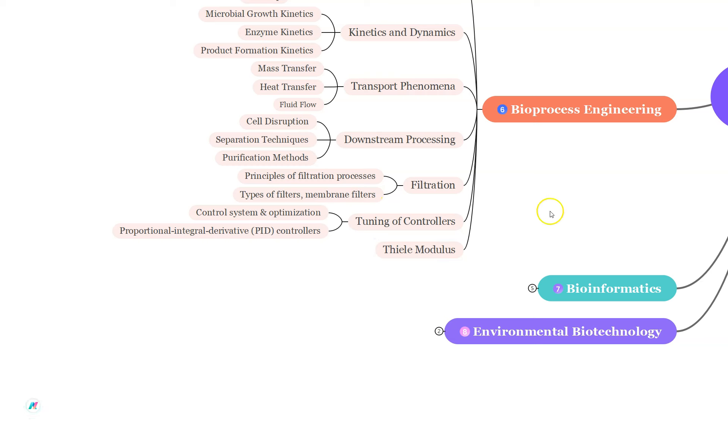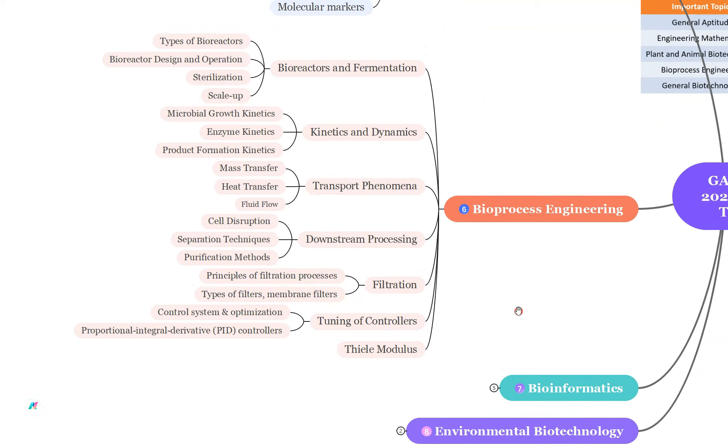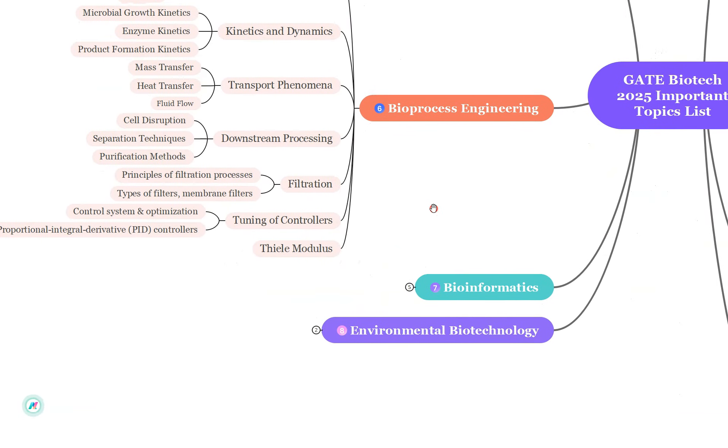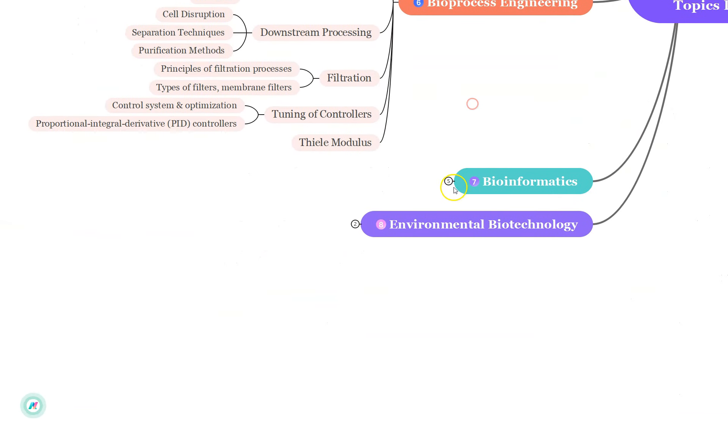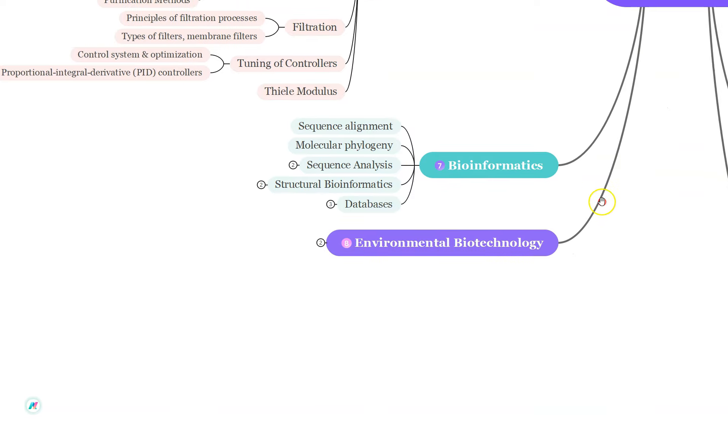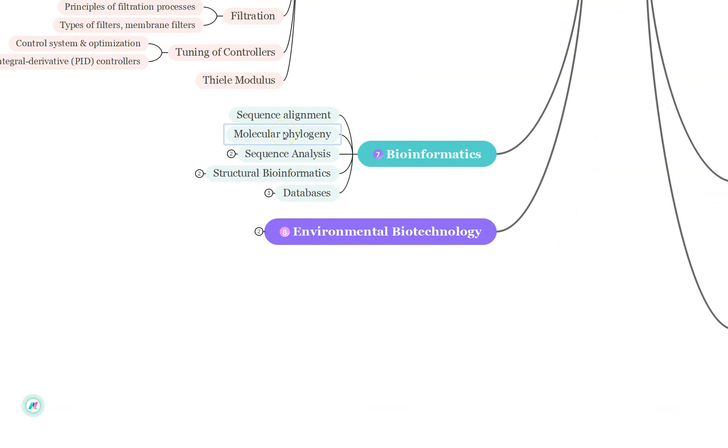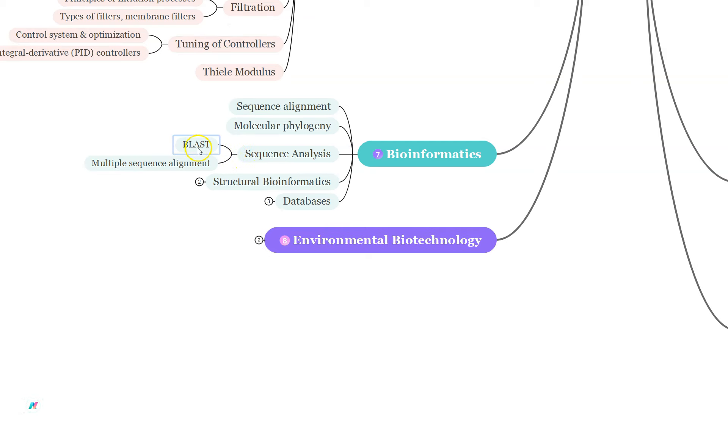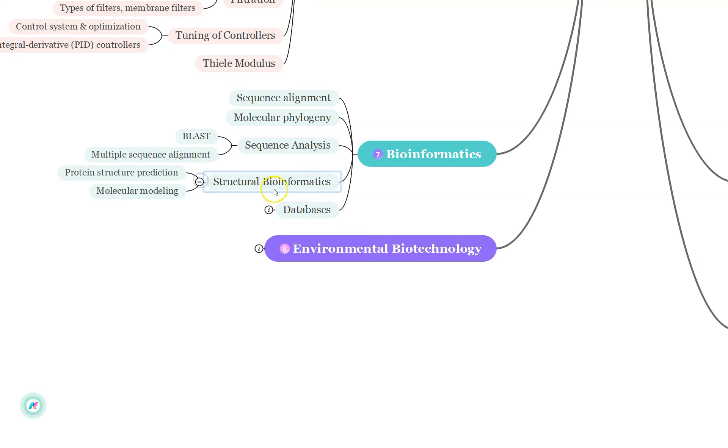By concentrating on these key areas you will be well prepared for the bioprocess engineering section of this GATE BT exam. Sometimes you also get questions from bioinformatics. Study about the sequence alignment, molecular phylogeny. From sequence analysis study about the BLAST and FASTA multiple sequence alignment. Structural bioinformatics: focus on protein structure prediction and molecular modeling.